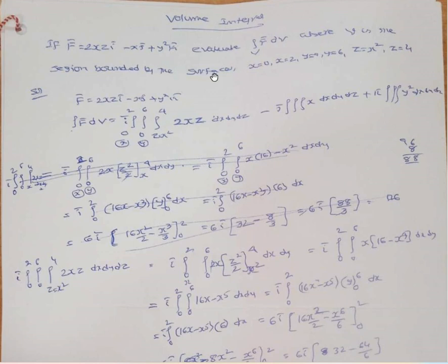Where V is the region bounded by the surfaces x = 0, x = 2, y = 0, y = 6, z = x² and z = 4. The answer is straightforward — the integral over V of f̄ dV requires applying the triple integral for each component term.